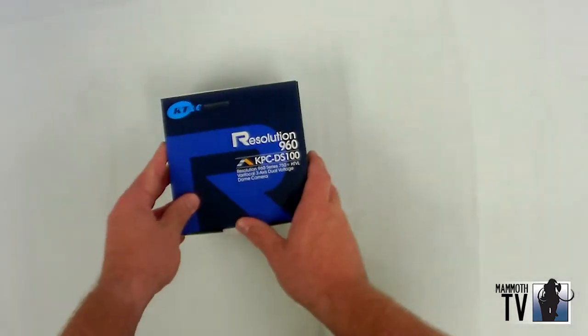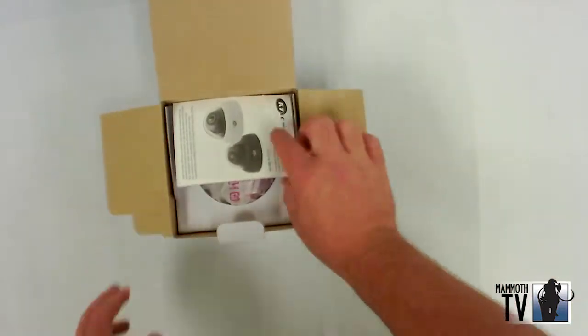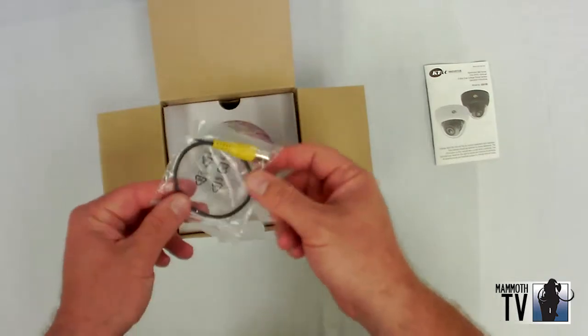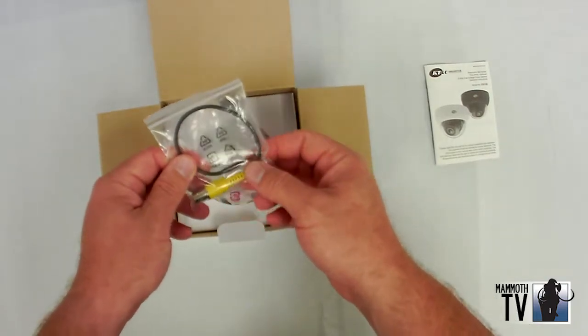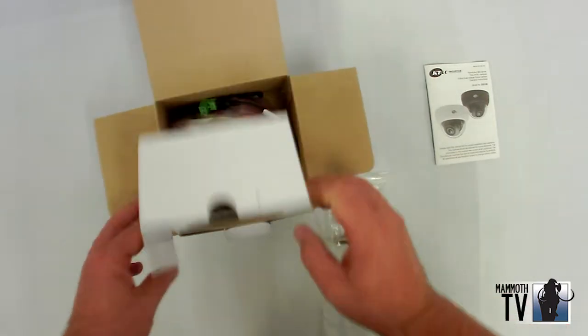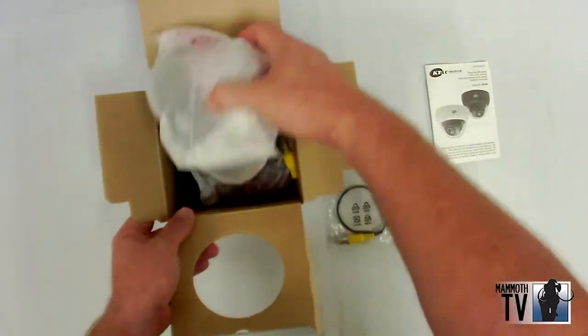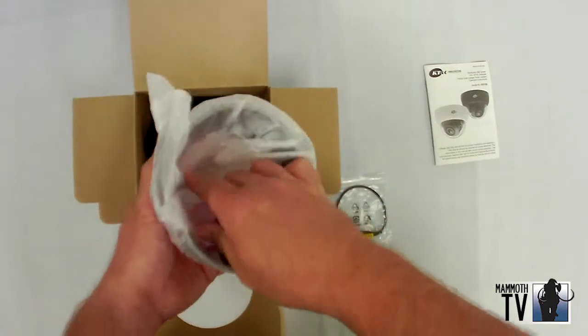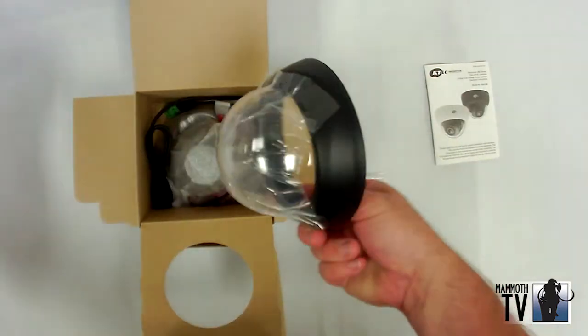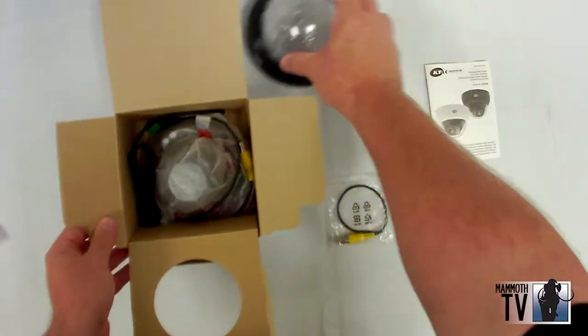Open the box like so. Inside you'll get the manual, the video cable for your spot monitor, and the outside dome.